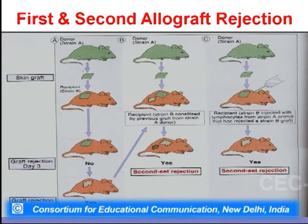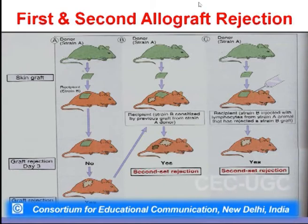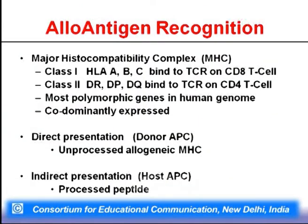A cartoon clearly shows mice with first and second set of allograft rejection. Alloantigen recognition is again based on MHC molecules — direct presentation and indirect presentation. Class 1 and class 2 are the most polymorphic genes of the human genome and must be co-dominantly expressed. Revisiting the MHC map, we have the class 2 region showing all genes. The comparison map of human and mouse leukocyte antigens shows similarity, including DQ and DR important for MHC class 2 locus.